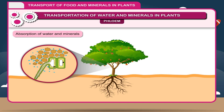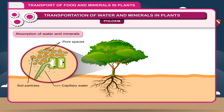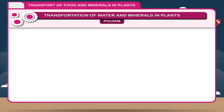Absorption of water and minerals: Plants absorb water and mineral salts from the soil with the help of their roots. The solution of water and mineral salts is termed capillary water, present between the soil particles in pore spaces. Along with water, mineral salts also enter the roots by the processes of osmosis, diffusion, and active transport.